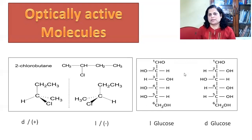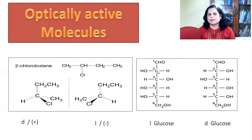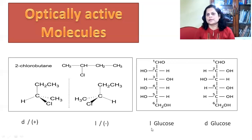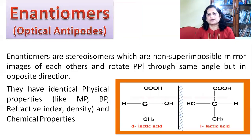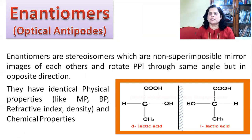Another example is glucose, which is also an optically active molecule. In glucose, carbon number 1 is bonded with two hydrogens and two bonds to oxygen, so it is not an asymmetric carbon atom. Carbon number 6 is also not asymmetric. But carbons number 2, 3, 4, and 5 are asymmetric carbon atoms because they are bonded with four different groups. Therefore glucose contains four asymmetric carbon atoms and shows optical activity, giving dextro-glucose and levo-glucose according to the rotation of plane polarized light.